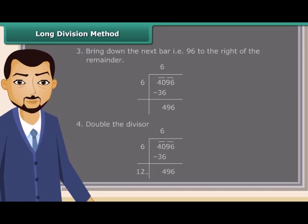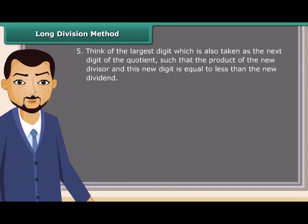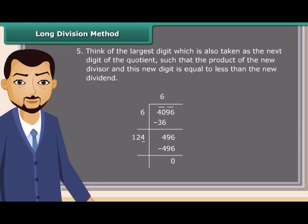Now, double the divisor. Next, think of the largest digit which is also taken as the next digit of the quotient, such that the product of the new divisor and this new digit is equal to less than the new dividend. Here we have 124 multiplied by 4 equal to 496. Since the remainder is 0, so the square root of 4096 is 64.